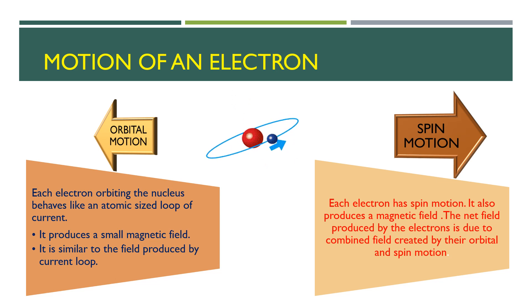The net magnetic field created by the electrons within an atom is due to the combined field created by both orbital and spin motions. Since there are a number of electrons in an atom, their currents or spin may be oriented or aligned to cancel the magnetic effects mutually or strengthen the effects of each other.